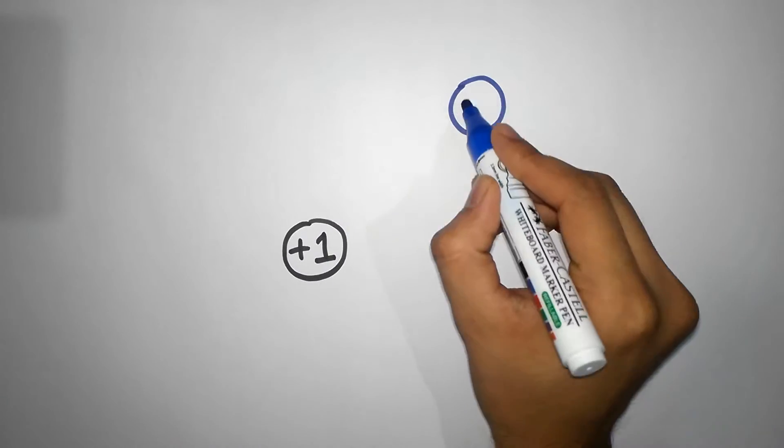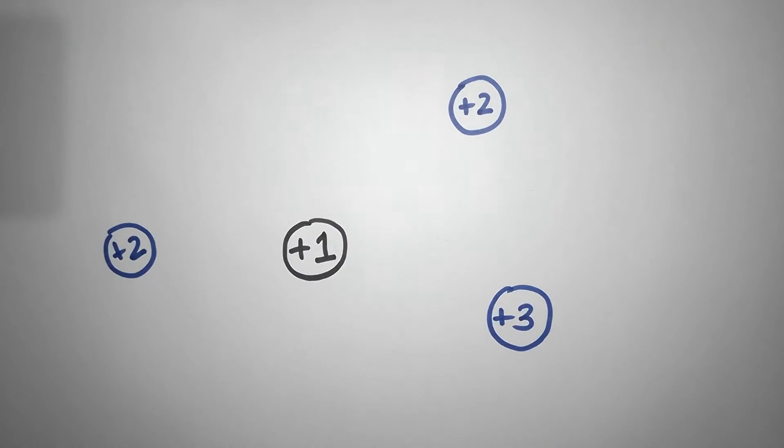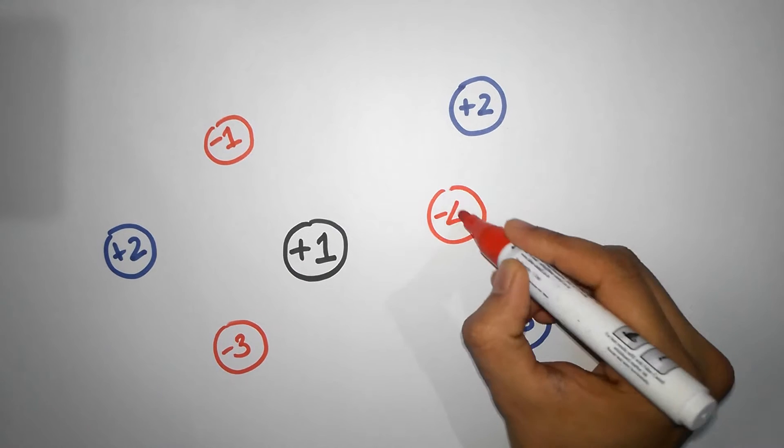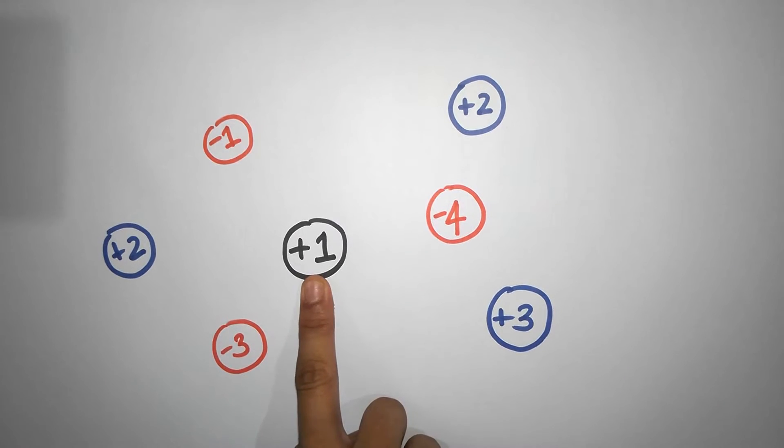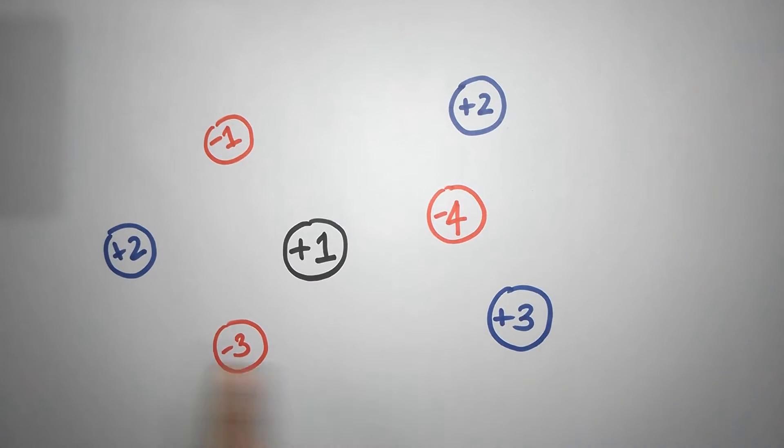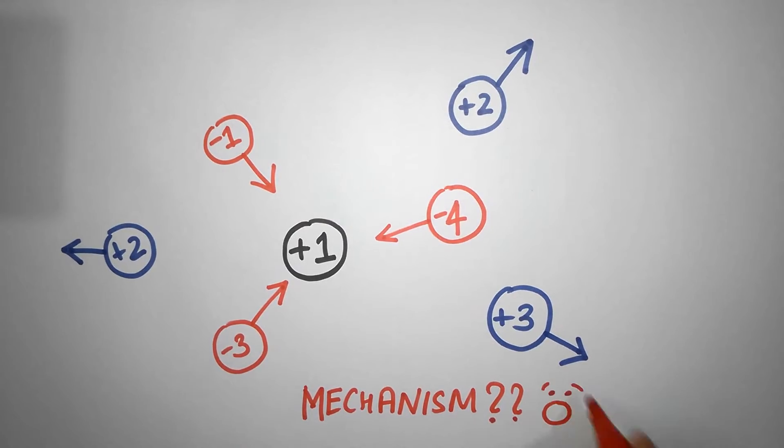You have learned that charges can repel and attract each other, right? But how do they do that? How does this positive charge know that there are other positive charges at these locations to push them away and negative charges to pull them? What's the mechanism of this non-contact force?